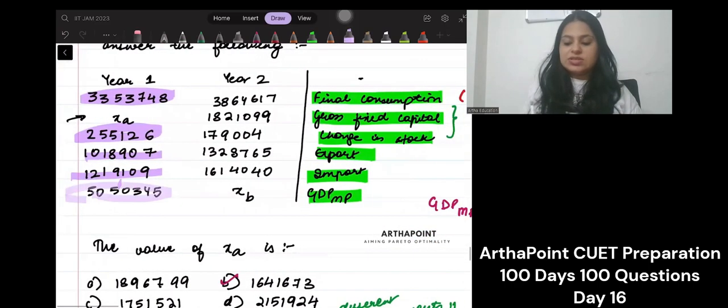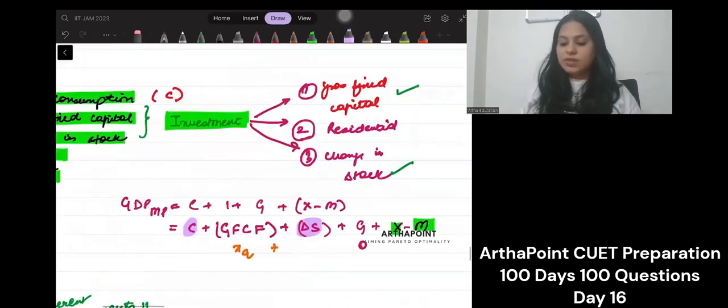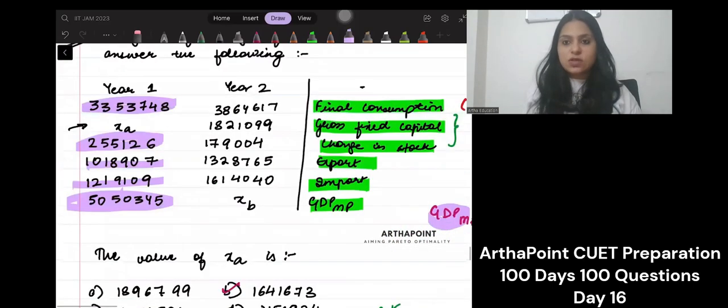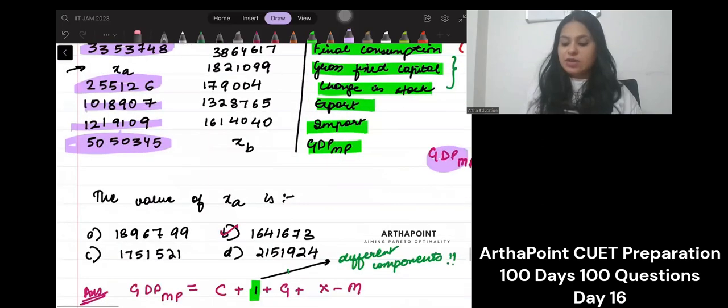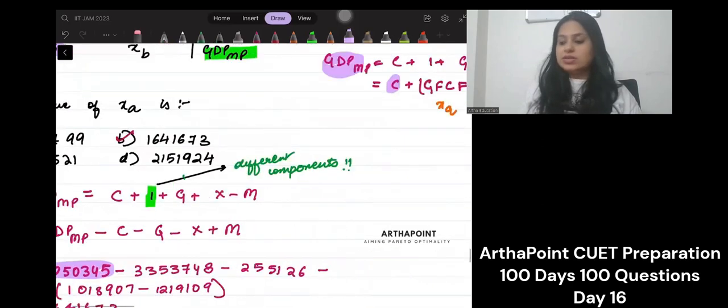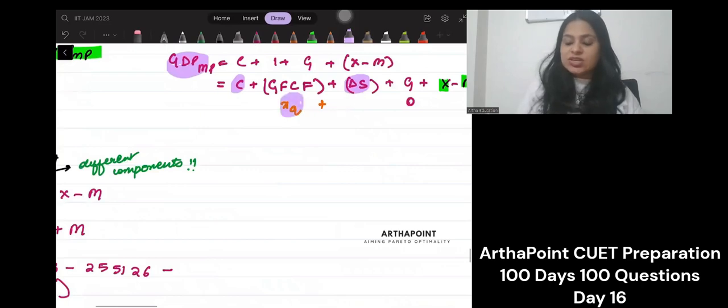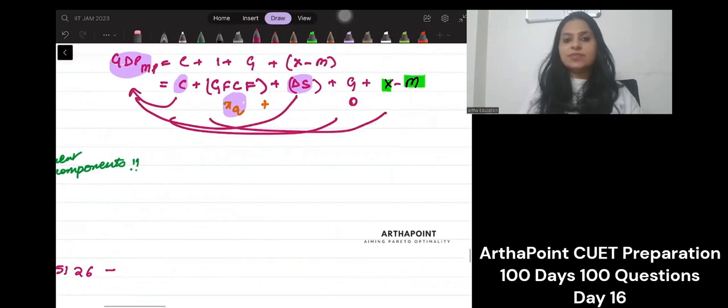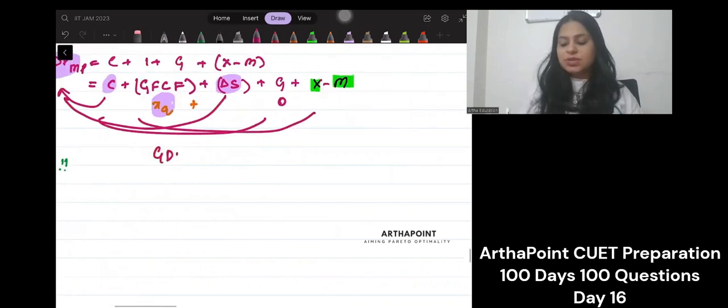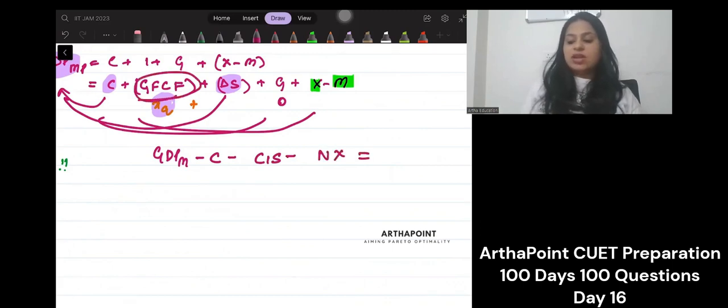GDPMP ki value also I am given. This is what I am given. This is what I am given. Is this clear? This is also what I am given. So what will I do? Instead of GDPMP, I will go ahead and I will put this amount. I am supposed to find this XA. So subtract all these from GDPMP. So you will say that GDPMP minus consumption minus change in stock minus net export. This will give you the remaining component that is gross fixed capital formation.